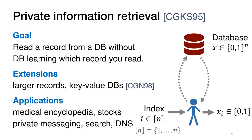PIR is useful in scenarios where the user's query contains some sensitive information. For instance, a query to a database of medical conditions might reveal some information about the user's disease, and a query to a database of stock prices may contain information about the user's financial interests. In both cases, the user would ideally want to keep his query private. PIR is also useful as a building block in larger privacy-preserving systems for applications such as private messaging, search, or DNS.